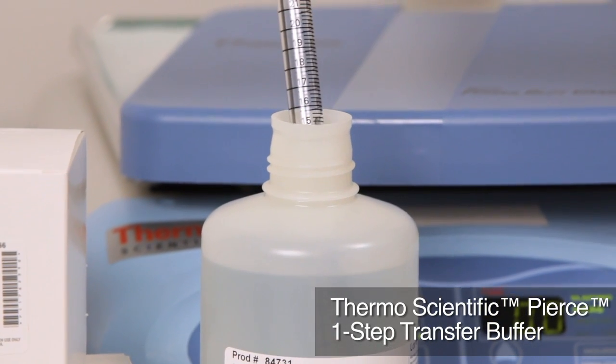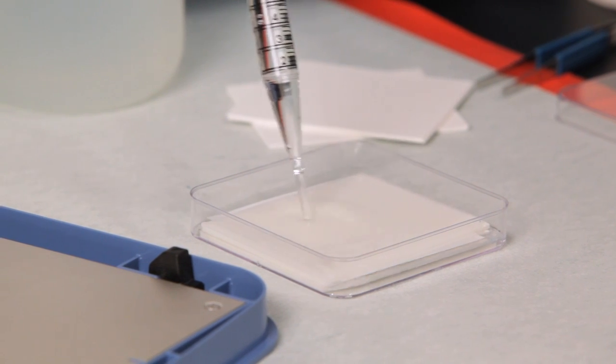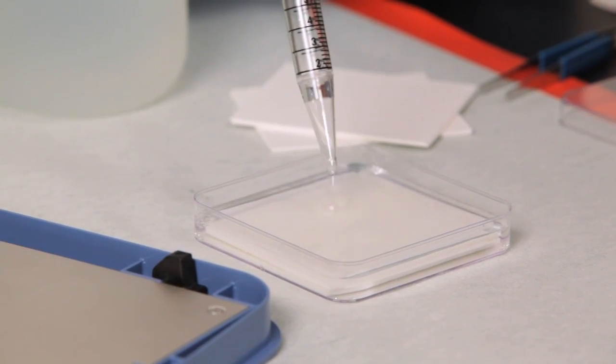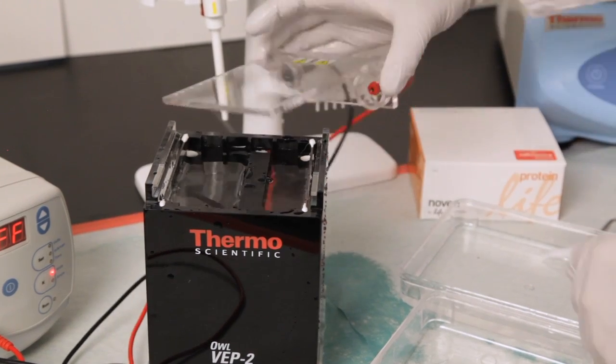Rapid transfers are performed using the Pierce One-Step Transfer Buffer, which allows a higher current to flow through the transfer stack than traditional buffers, such as Tobin Buffer, that are used for more time-consuming transfer methods.